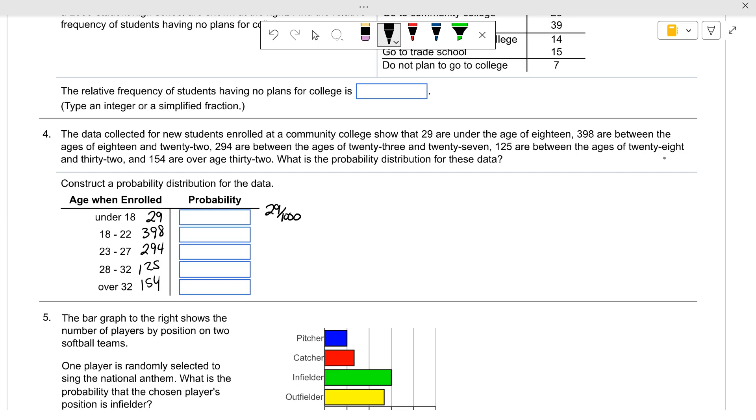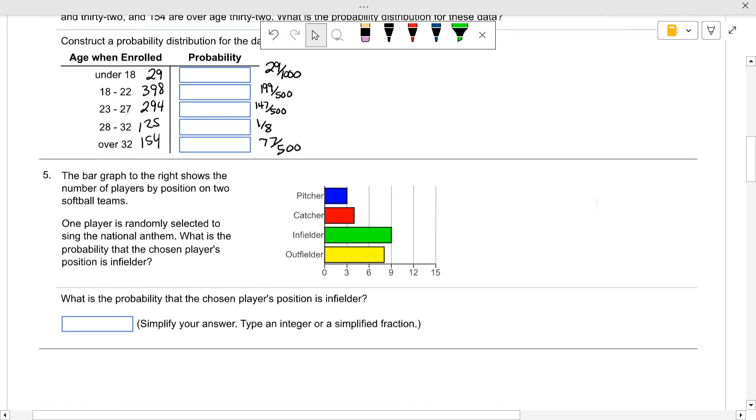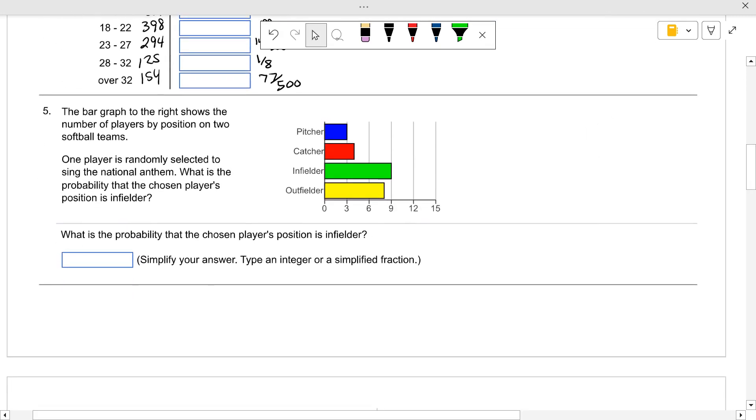199 over 500. 294 over a thousand would probably be 147 over 500. 125 over a thousand? One-eighth. And 154 over a thousand? 77 over 500. Okay, so that's a probability table. So you put the probabilities in at the end, okay?